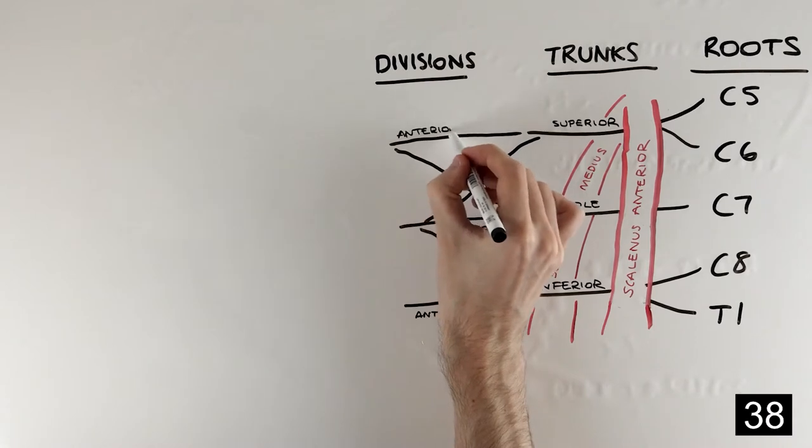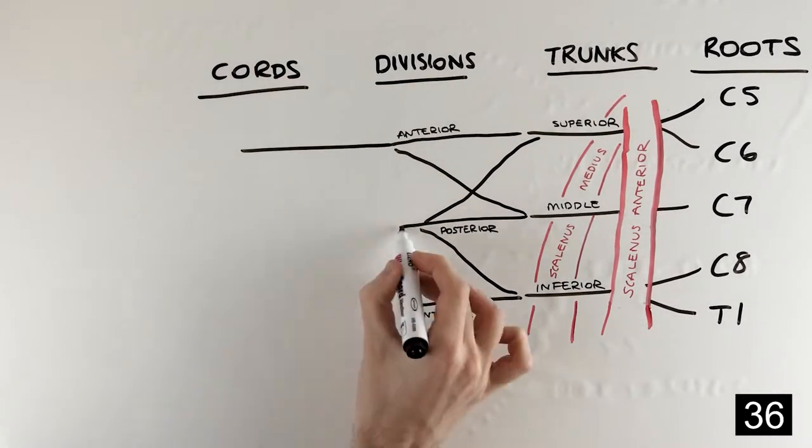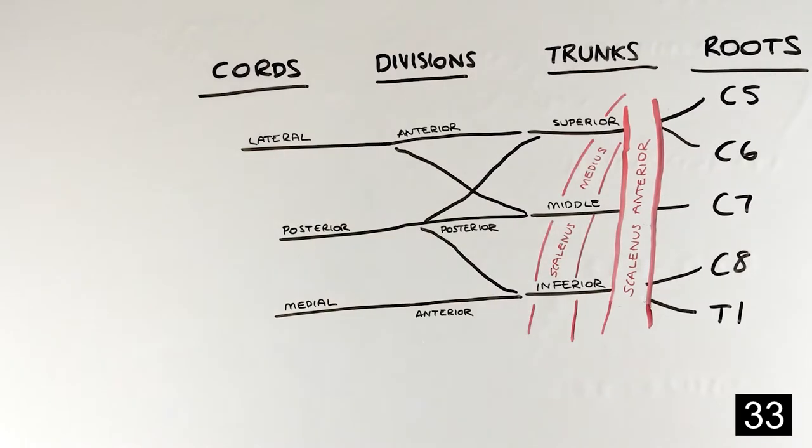We then need to form three cords, which lie lateral, posterior and medial to the axillary artery.